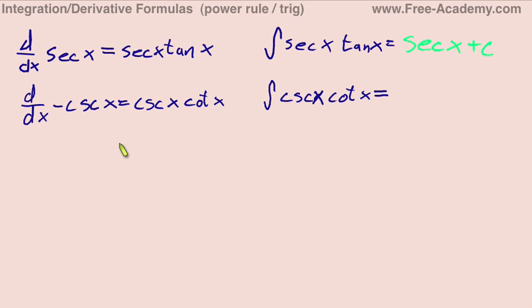And for the final formula I'm going to do, derivative of negative cosecant equals cosecant x cotangent of x. The integral of cosecant x cotangent of x equals negative cosecant x plus c.